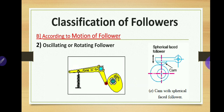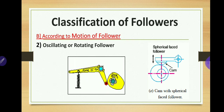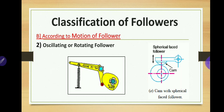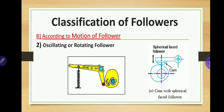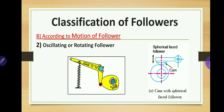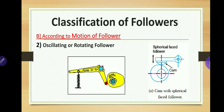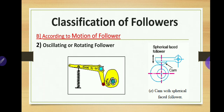The second type is the oscillating follower. When the uniform rotary motion of the cam is converted into a predetermined oscillatory motion of the follower, it is called an oscillating or rotating follower. The follower oscillates about a fulcrum point, as shown in the diagram.